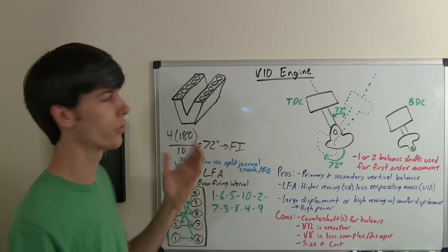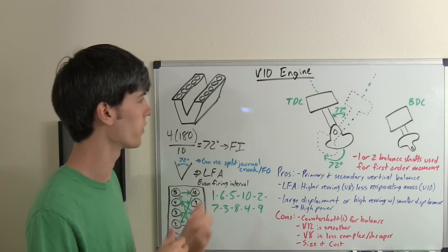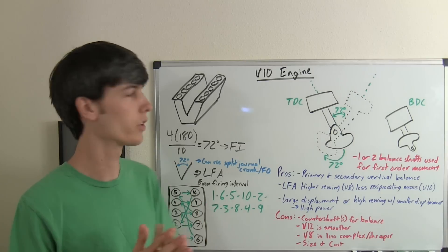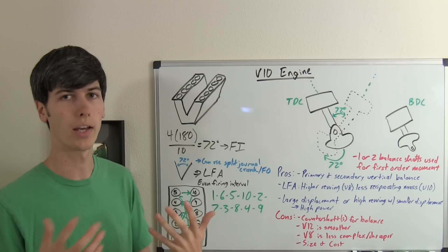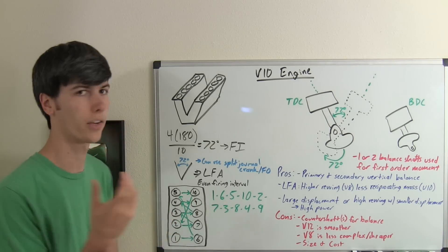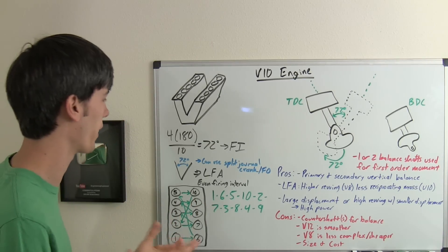You can use different splits; the Dodge Viper I believe is 90 degrees, and there are different degrees that you can use. You can either change the firing order or you can use a split journal crank, which I explained in my video on V6s if you'd like to learn more about that.